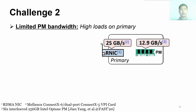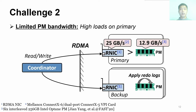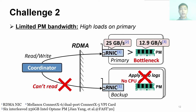The second challenge is caused by the limited benefits of PM. PM shows lower write bandwidth than the new RDMA NIC, or RNIC. However, existing systems write redo logs to the backups, and coordinators cannot read data from backups since the redo logs haven't been applied to the in-place location after the transaction commits. As a result, all requests are sent to the primary. Such imbalanced load causes the PM in the primary to be a performance bottleneck. In addition, applying redo logs requires the CPU to move data, which fails to work in the PM pool. Therefore, we need a new method to read and update the backups.